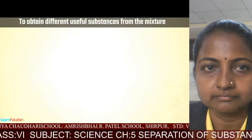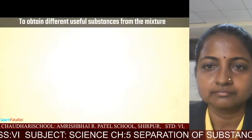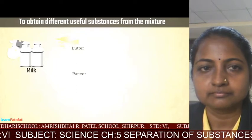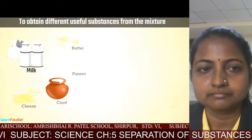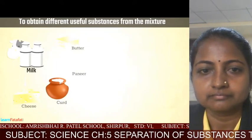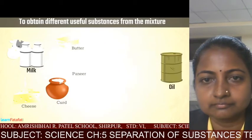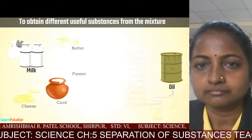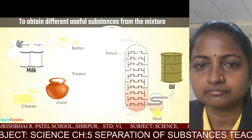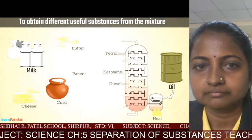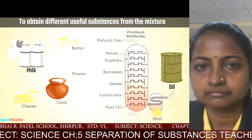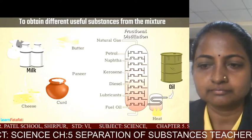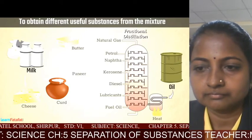Many times, separation is needed to obtain different useful substances from a mixture. For example, with various separation methods we get different useful materials from milk. The oil obtained from the earth's crust contains many useful substances such as petrol, diesel, and kerosene. With proper separation methods — such as fractional distillation — we can separate all these useful components from oil.